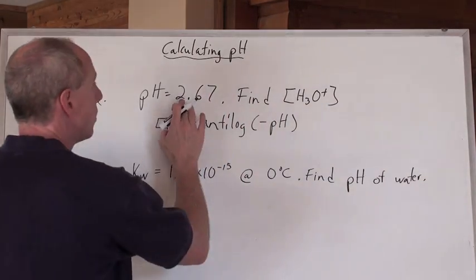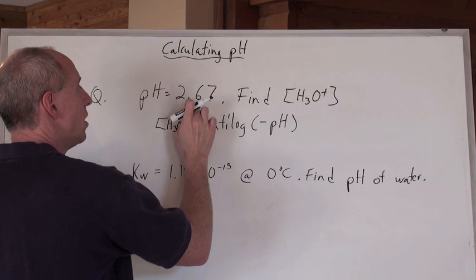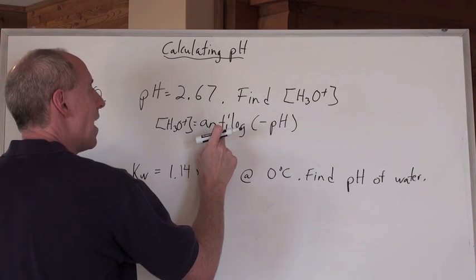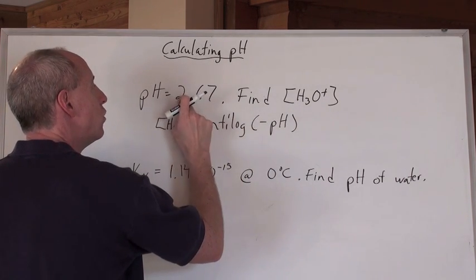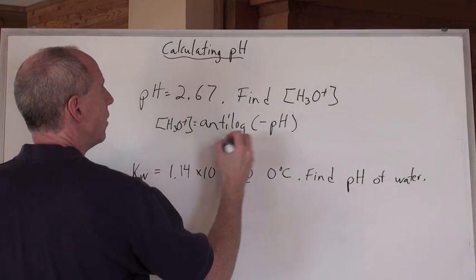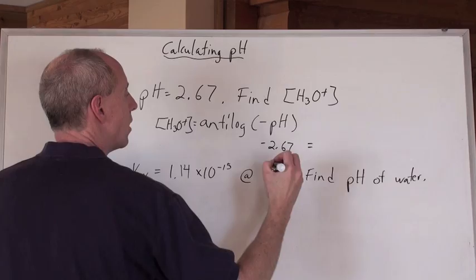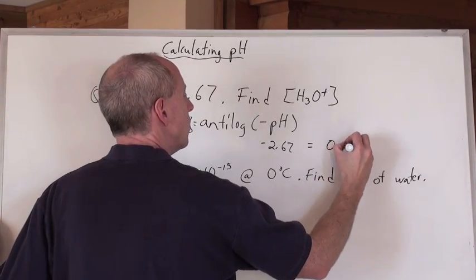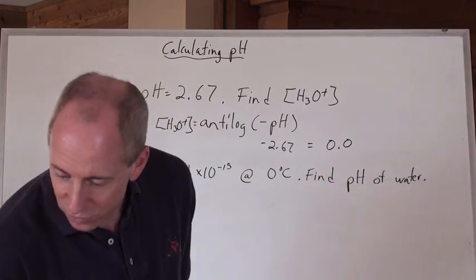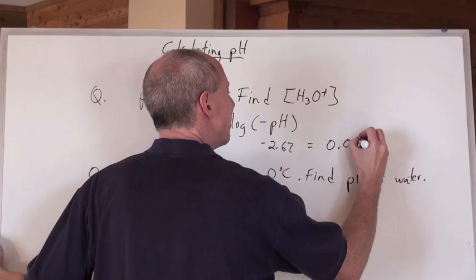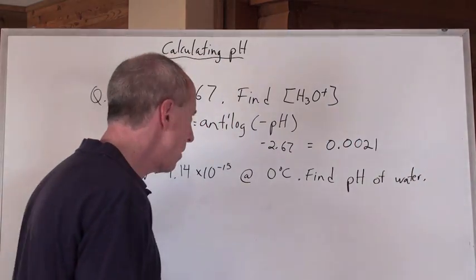So when you actually want to calculate the hydronium ion concentration here, when you've got the pH, you take the anti-log of negative 2.67. So when you actually do that here, and you take the anti-log of negative 2.67, you actually get 0.0021. Now watch it, chem guy,